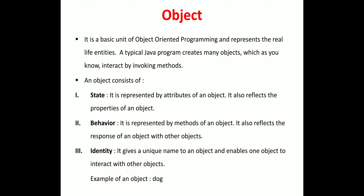Next we discuss the object concept. An object is a real-world entity — it may be a pen, a book, a table, a chair, a blackboard, a duster, or anything you can identify. Objects are the basic unit of object-oriented programming and represent real-world entities.